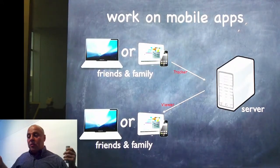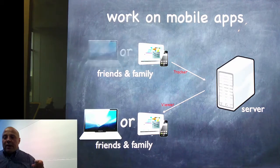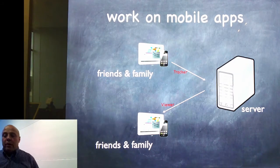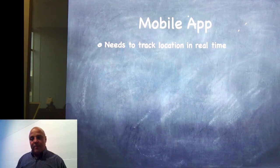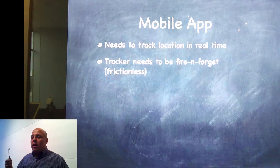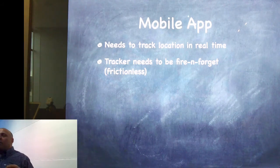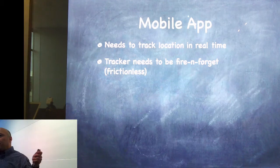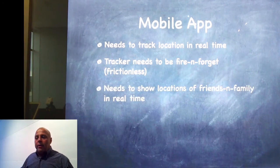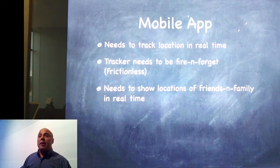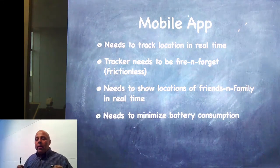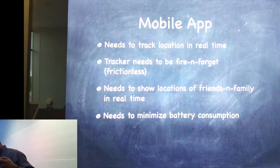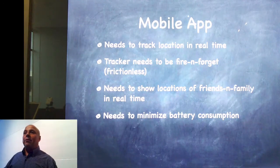Now that we've got the server component working, let's forget about the web app and focus on the mobile apps. The mobile app needs to track location in real time. The tracker needs to be fire-and-forget — I installed the app on my wife's iPhone, turned it on, pushed the home button, the app runs in the background and we never touch it anymore. The viewer needs to show location to friends and family in real time. This app is useless if we can't do things in real time. We also need to minimize battery consumption — if your app is a battery hog, your users are going to uninstall it.